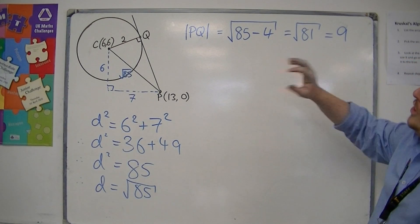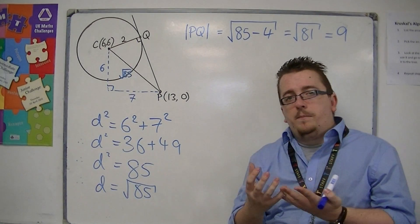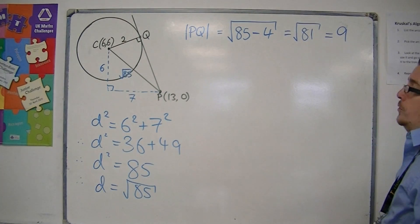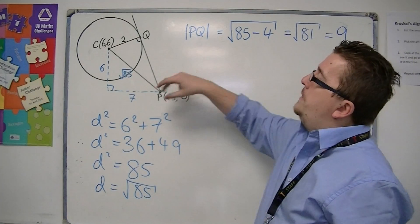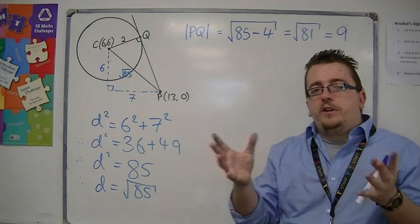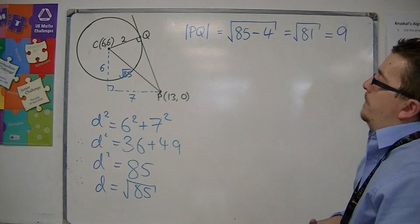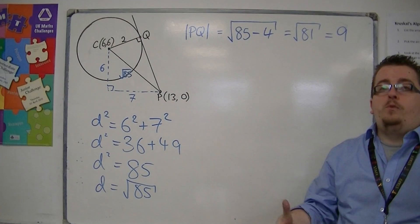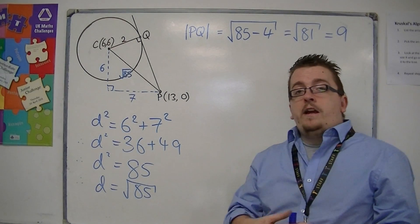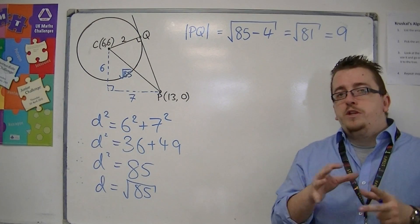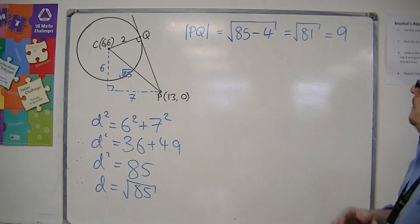So that shows you how a diagram is really useful with circle questions, because it allows you to draw on them and think, 'Here's a right-angled triangle, so I could use Pythagoras. How am I going to work out that missing side? Well, I might need to use Pythagoras again.' A diagram can really help you figure out your process for solving a problem similar to this one.